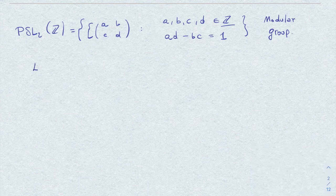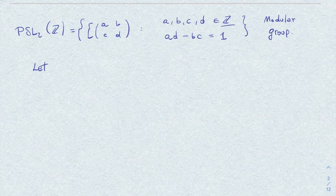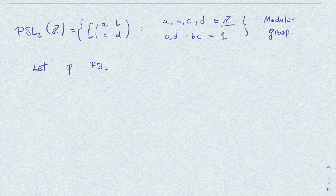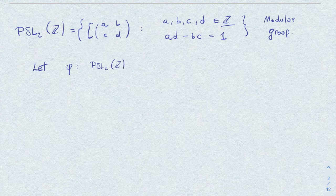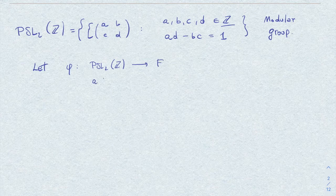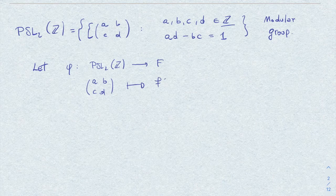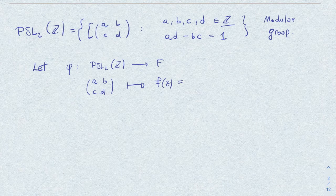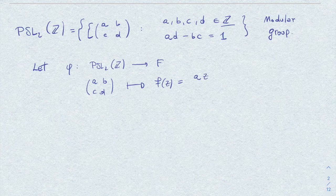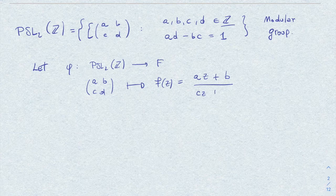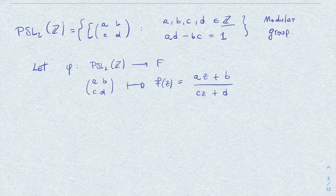Our correspondence is defined in the obvious way. Let's call it φ. We associate the matrix ABCD to the function f(z) of the corresponding form.